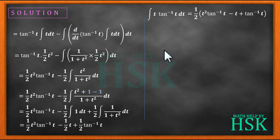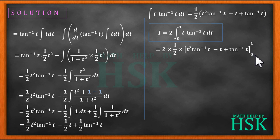Since we have assumed i is equal to 2 into integration of t into tan inverse of t dt from the limit 0 to 1, therefore we have i equal 2 times 1 by 2 into t square tan inverse t minus t plus tan inverse t, from the limit 0 to 1.